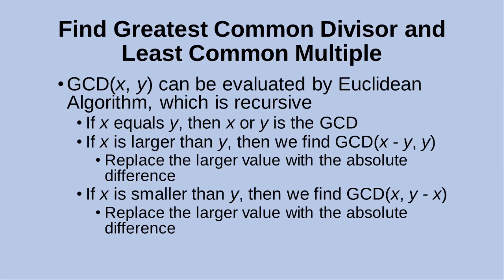The way to find out the GCD of two numbers can be done by means of the Euclidean algorithm, which is a recursive algorithm. The process is like this: we have two numbers to be put into the GCD function. If the two numbers are equal to each other, then we just state that x or y is simply the GCD. And if x is larger than y, we can find out the GCD of x minus y and y — we replace the larger value with the absolute difference of the two values.